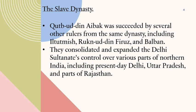Qutbuddin Aibak was succeeded by several other rulers from the same dynasty, including Iltutmish, Ruknuddin Firuz, and Balban. They consolidated and expanded Delhi's control over various parts of northern India, including present-day Delhi, Uttar Pradesh, and parts of Rajasthan.